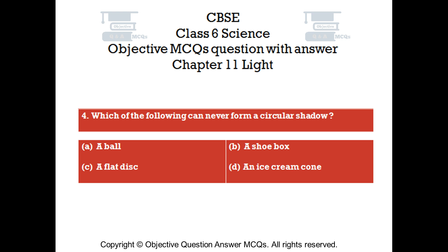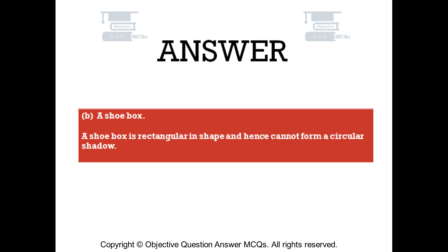Question number 4. Which of the following can never form a circular shadow? Option A: a ball. Option B: a shoebox. Option C: a flat disc. Option D: an ice cream cone. The right answer is option B — a shoebox. A shoebox is rectangular in shape and hence cannot form a circular shadow.